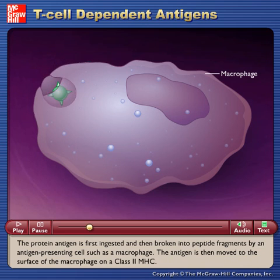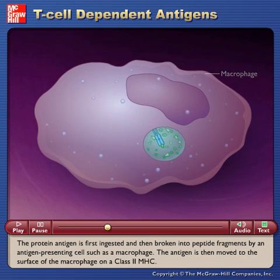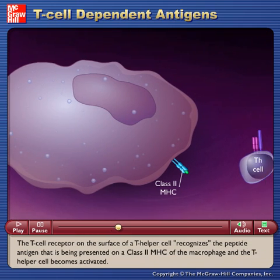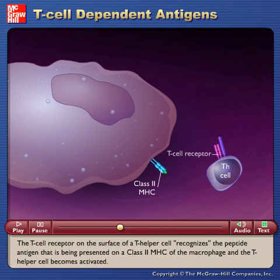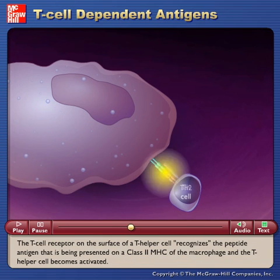The protein antigen is first ingested and then broken into peptide fragments by an antigen-presenting cell, such as a macrophage. The antigen is then moved to the surface of the macrophage on a class 2 MHC. The T cell receptor on the surface of a T helper cell recognizes the peptide antigen being presented on a class 2 MHC of the macrophage, and the T helper cell becomes activated.